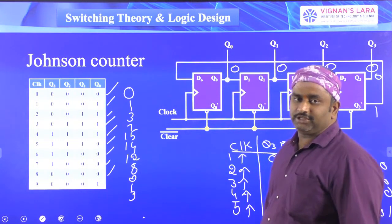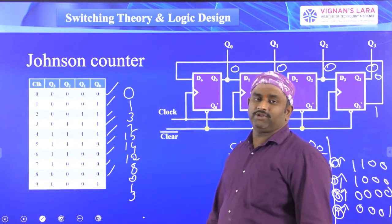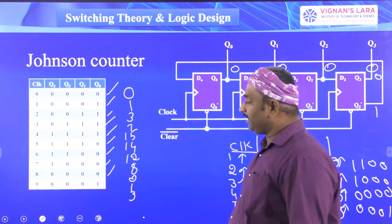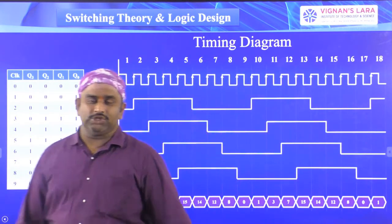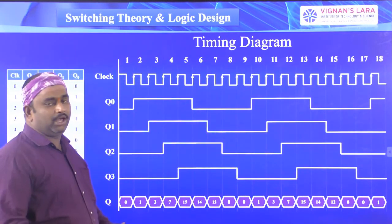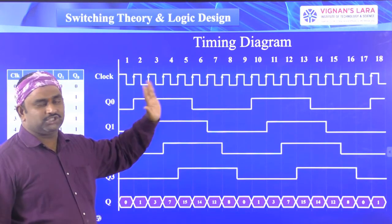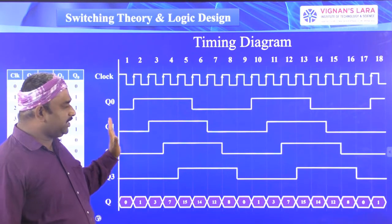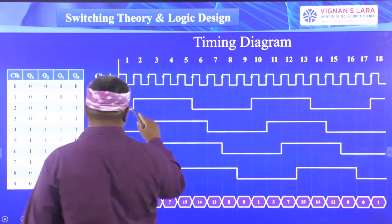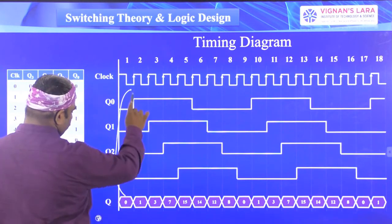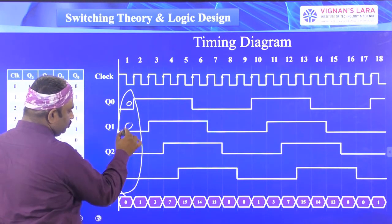This is the Johnson counter operation, which is an application of shift registers. The truth table for the Johnson counter or twisted ring counter shows eight clock cycles with eight different output combinations, starting and ending with four zeros.